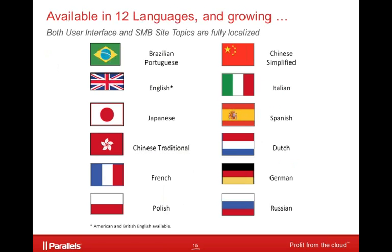Very important for many of our international customers is that Web Presence Builder is available in 12 languages — and we're adding others all the time. The next ones coming up are going to be Korean, which will come out in another month or so. Both the user interface for Web Presence Builder as well as the site topics created within that user interface are available in 12 different languages today. So it's highly internationalized.